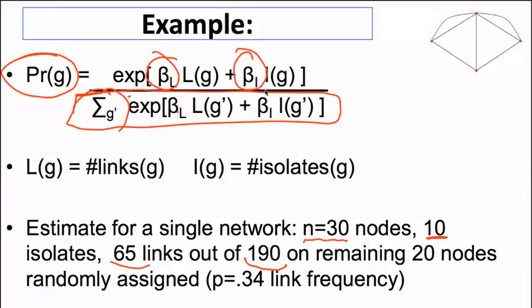So if you want to figure out what these betas look like, in this case, the betas, if you recall, when we've tried to fit in our Erdos-Renyi random networks into this setting, the betas work out to be equal to the log of the probability of something happening compared to 1 minus P. So in terms of links, that's going to be 0.34 compared to 1 minus 0.34, and also for isolates.